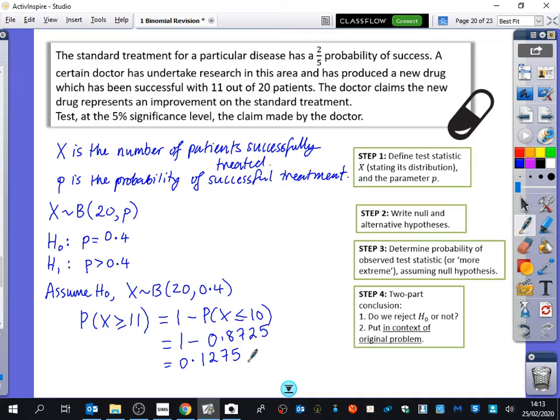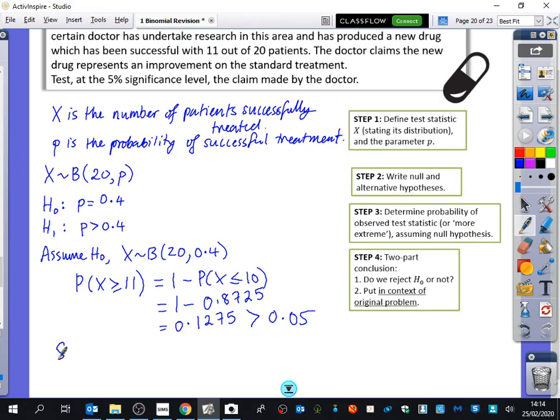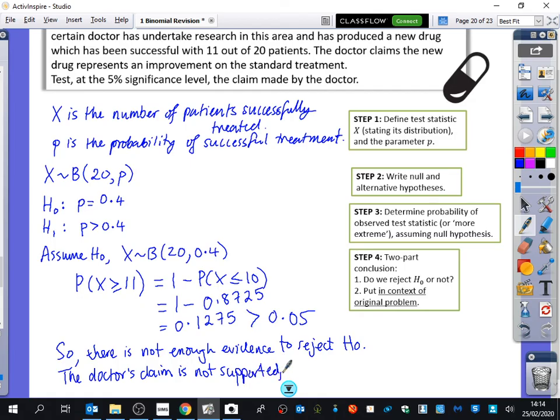So there is not enough evidence to reject the null hypothesis. That's one of the marks. So then the doctor's claim is not supported. The doctor's claim is not supported. Same level of success for the drug.